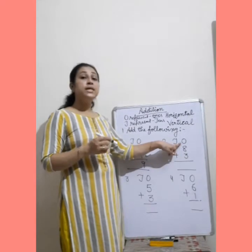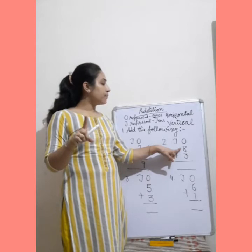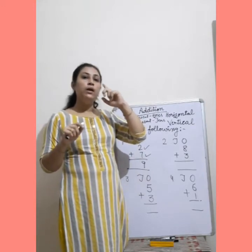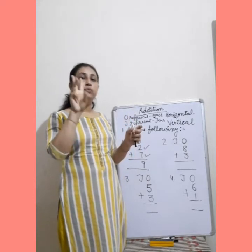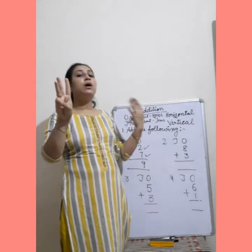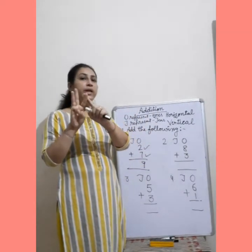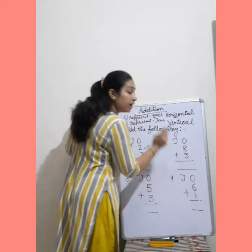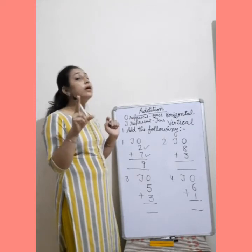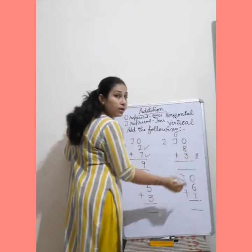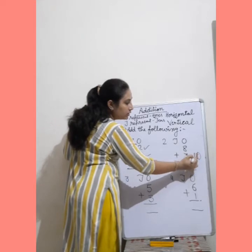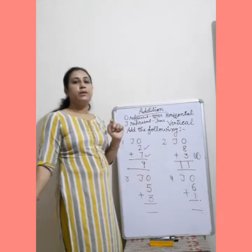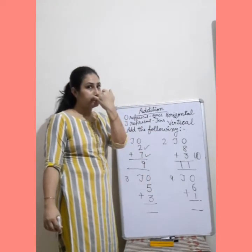O means ones, T means tens. First number क्या है? Eight. And second number क्या है? Three. Eight keep in your mind. And three finger up — one, two, three. We will count after eight — nine, ten, eleven. Your answer is eleven, and right here eleven. Eleven में कितने digit हो गए? Two. तो ones place वाला one — ones place के नीचे आएगा, और दूसरा one tens place में जाएगा.